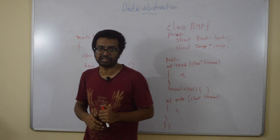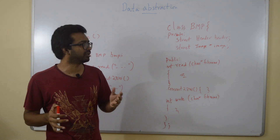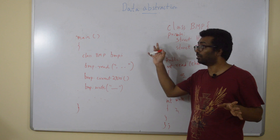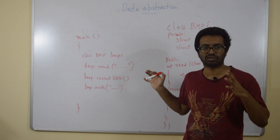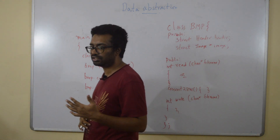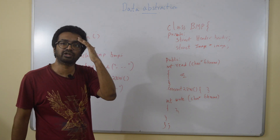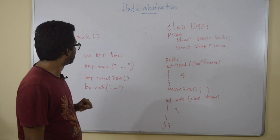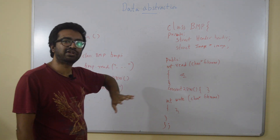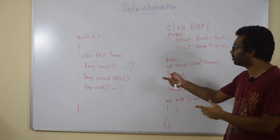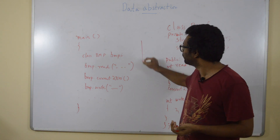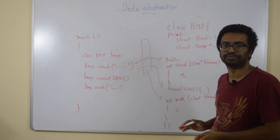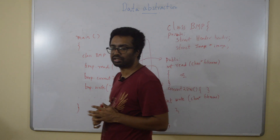The data is private and can only be accessed from within the class. The functions are public and can be called from outside. The class writer can decide which functions are private or public, and which data members are private or public. Even functions can be private — then they can only be called internally from within other class functions.